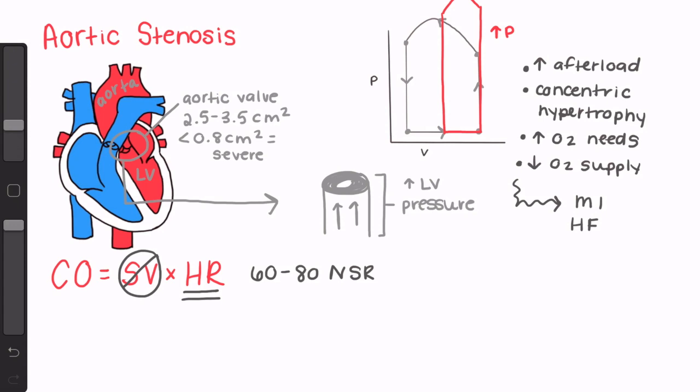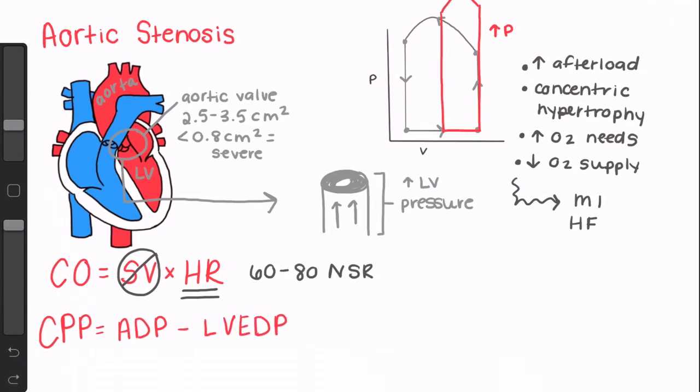Tachycardia is specifically poorly tolerated because it does not allow enough time in diastole to perfuse the coronary arteries. Second, remember the equation for coronary perfusion pressure,